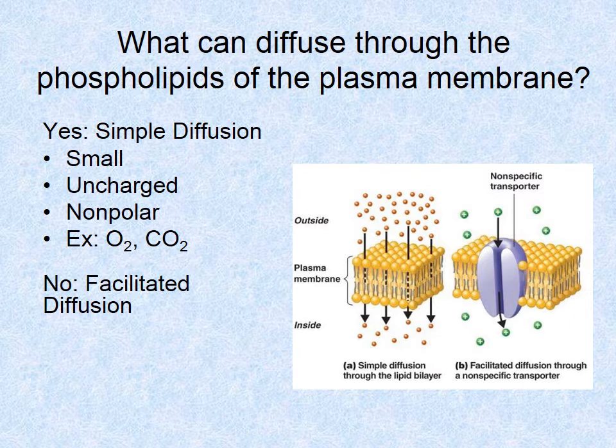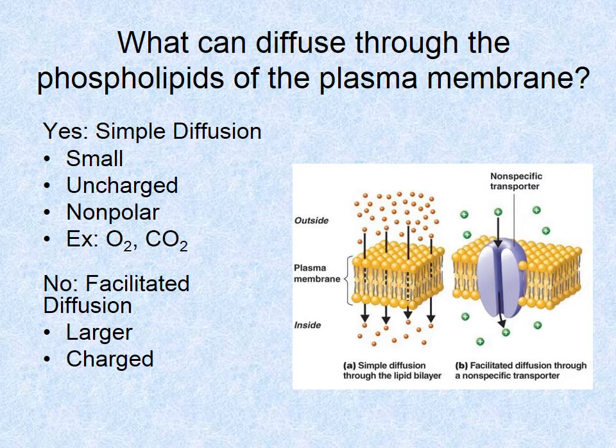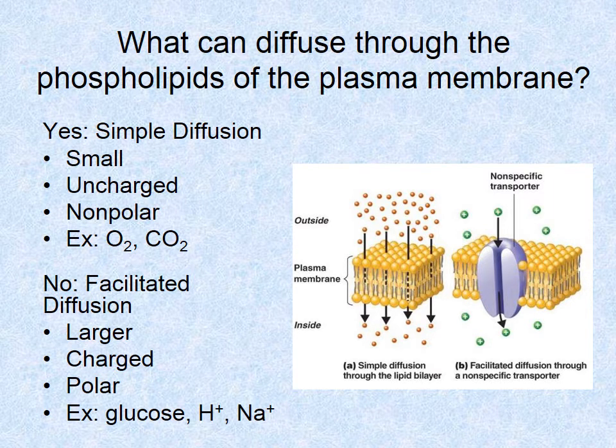What cannot simple diffuse has to go through facilitated diffusion using proteins. Facilitated diffusion is needed for larger molecules, charged molecules, ions, and polar molecules — for example, glucose, which is a large sugar molecule. The take-home message: simple diffusion passes through the phospholipids themselves, while facilitated diffusion uses a protein channel. Molecules are still moving with the concentration gradient — no energy involved — but different types of molecules can pass through each pathway.